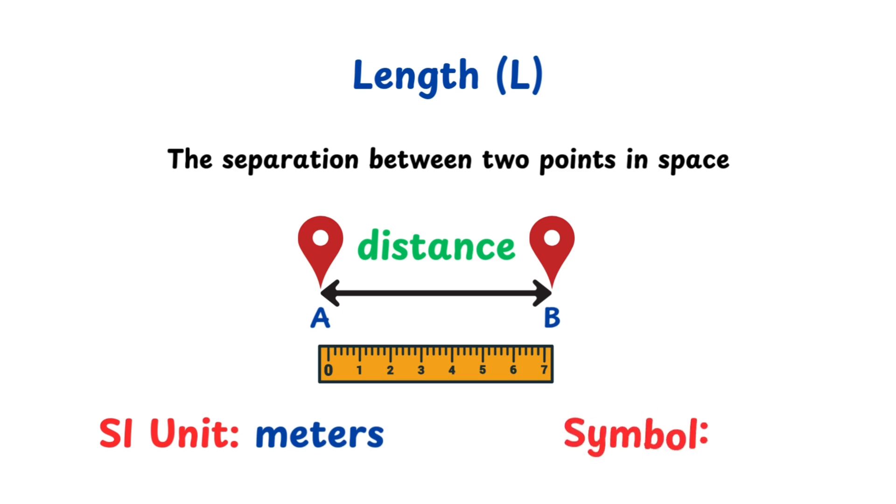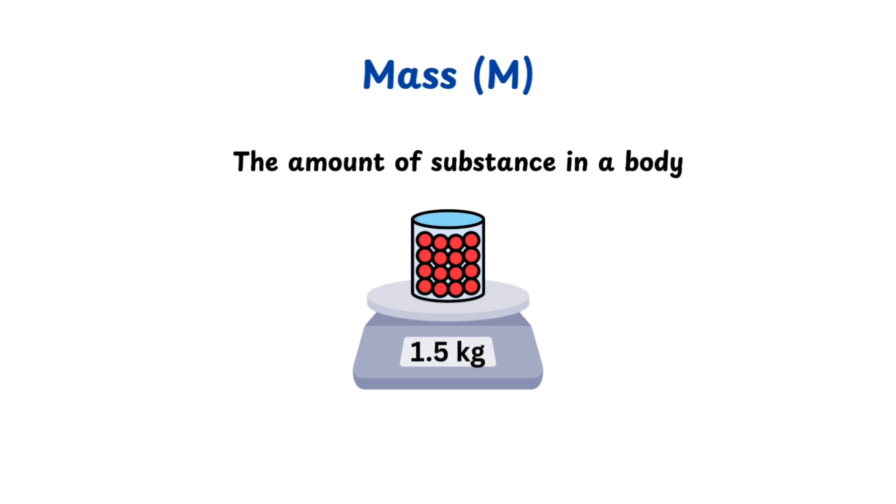Mass with symbol M refers to the total amount of substance in an object. The SI unit for mass is the kilogram with symbol kg. Time with symbol T refers to the interval between two events. The SI unit for time is the second with symbol s.